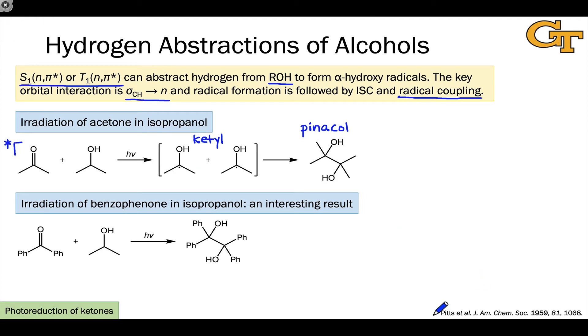An interesting example comes from this Pitts paper way back in 1959, where they took benzophenone rather than acetone and irradiated it in the presence of isopropanol. An interesting result was obtained. Rather than the expected hydrogen transfer from the carbon of isopropanol in the formation of a mixed diol with phenyl rings on one side and methyls on the other, they observed exclusively this compound, benzopinacol, from the coupling of two ketyl radicals derived from benzophenone.